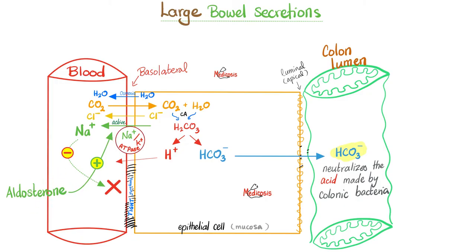Under aldosterone's command, you absorb more sodium to the blood and secrete more potassium to the stool. Cellular metabolism takes in oxygen and releases carbon dioxide. This CO₂ plus water gives carbonic acid, which dissociates into acid and base. The base goes to the lumen of the colon to neutralize the acidity made by your natural colonic bacteria, which produce carbon dioxide, hydrogen gas (which can give you protons — acids), as well as methane. Chloride follows sodium, and water follows salt via osmosis.